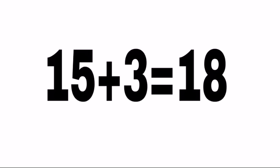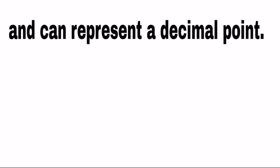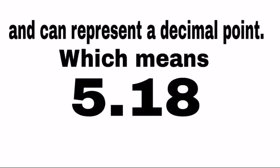5. 5 plus 3 equals 18. 5 and 18. And the can represents a decimal point which means 5.18.